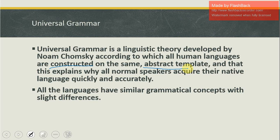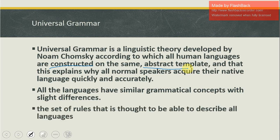All languages have similar grammatical concepts with slight differences in sentence structure — for example, SVO order differs between English, Urdu, and Spanish. The set of rules that can describe all languages includes nouns, verbs, time concepts, common nouns, and proper nouns existing in all languages. That was all for this theory. If something was skipped or not given proper importance, ask in the comments or suggest another video. Keep watching — thank you, stay blessed.